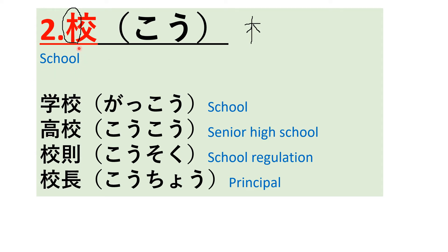We can make a relation between school and tree: in school, the benches, books, and pencils — most things are made using wood from trees. So we can remember this kanji by making such a relation. The examples are: gako, meaning school; koko, meaning senior high school; kosoku, meaning school regulation; and kocho, meaning principal. All these words are related to school.